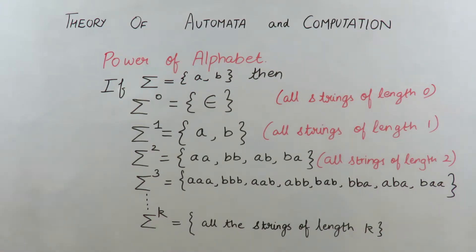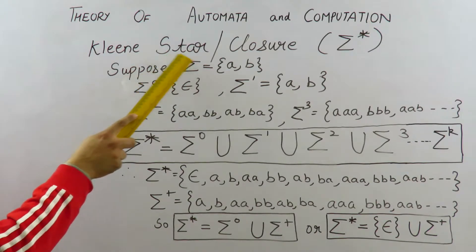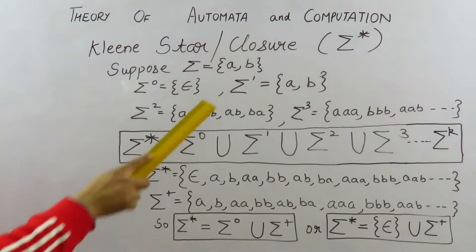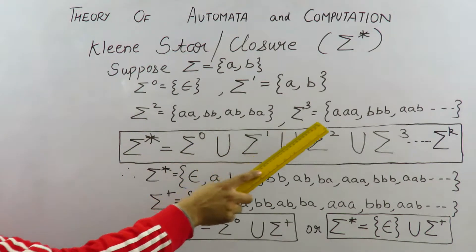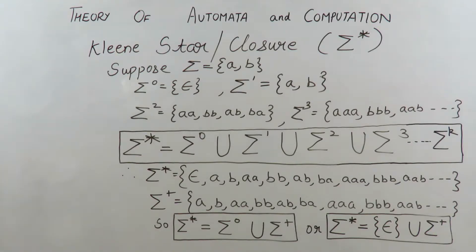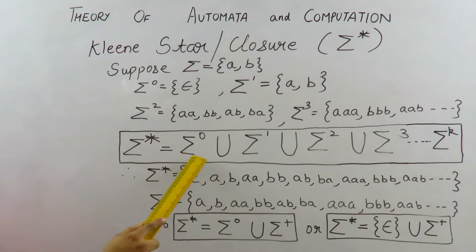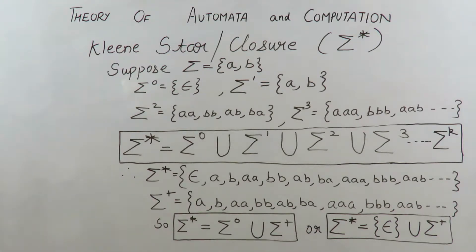Now that we are clear with the power of alphabet, I will explain the term Kleene closure or Kleene star. Based on our study of powers of an alphabet, Kleene star is represented by sigma with a star on it. We have studied alphabet {a, b} and the powers: sigma 0 is null, sigma 1 is {a, b}, sigma 2 is {aa, bb, ab, ba}, sigma 3 is all strings of length 3. Kleene star is defined as the union of all these powers of alphabets. Sigma star equals sigma 0 union sigma 1 union sigma 2 union sigma 3, up to the power k. If we union all these powers, we get the Kleene star or closure set.